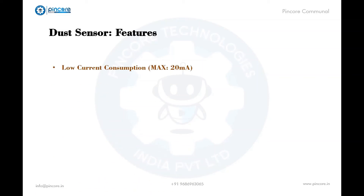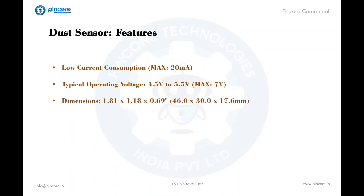Here are a few features of the dust sensor. The current consumption is a maximum of 20 milliamps. The typical operating voltage is between 4.5 to 5.5 volts, with a maximum of 7 volts. Its dimensions are 46 × 30 × 17.6 mm.